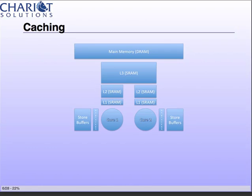Going out from a core to get data from registers, you'll see access within single nanoseconds. Store buffers are in the teens of nanoseconds. L1 gets you out to the 20s–30s nanoseconds. L2 is around 50, L3 around 100. Once you're going to main memory, you're talking about microseconds. While that performance hit sounds minuscule, think about it on a relative basis — you're talking about one-tenth or one-twentieth the speed. That's a pretty big performance gain by organizing your code so that data is more local to your core.